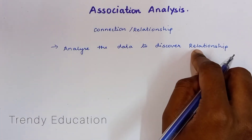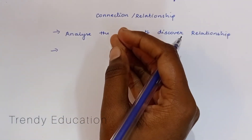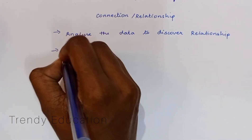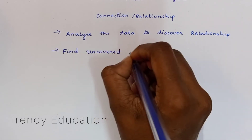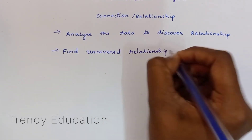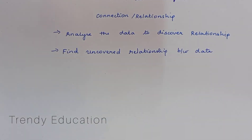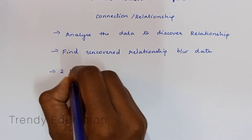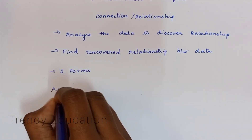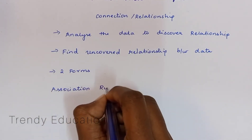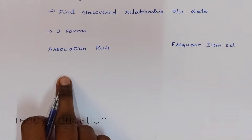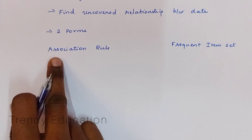So what relationship or connection are we going to find? This is nothing but the uncovered relationships between the data — found out by the data miners. The relationship between data is of two forms. The first one is association rule and the second one is frequent item set.